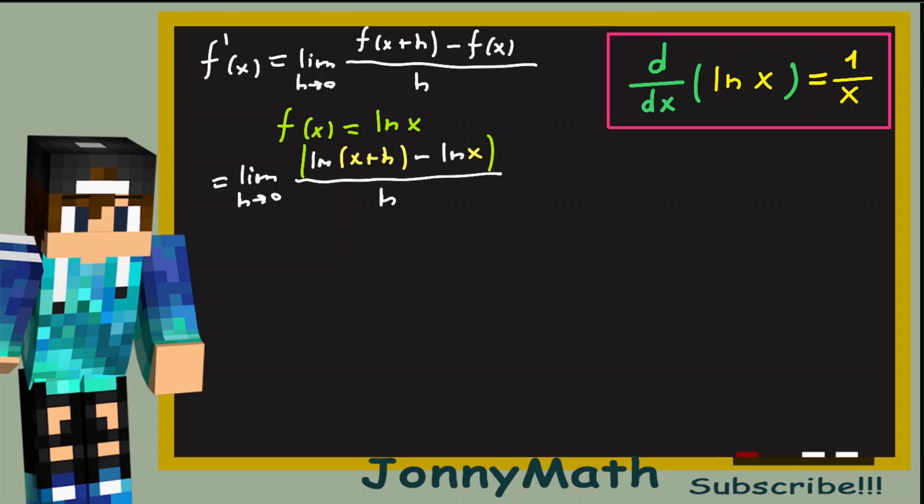Okay, notice how we have a difference of logarithms. So, using log properties, we can rewrite the whole limit as the limit as h approaches 0 of 1 over h times the natural log of x plus h all divided by x.